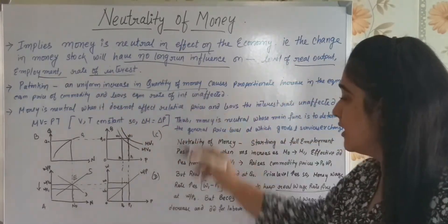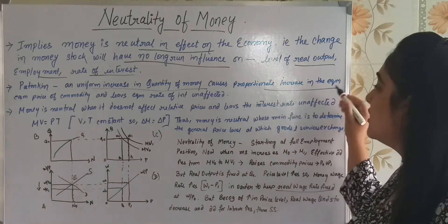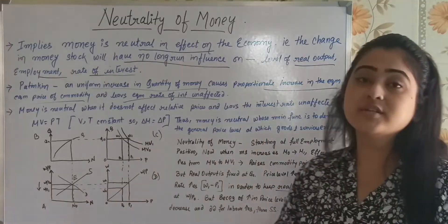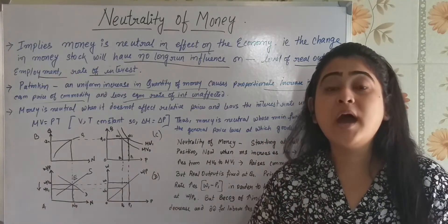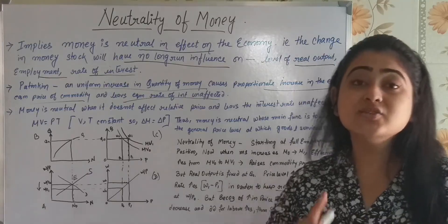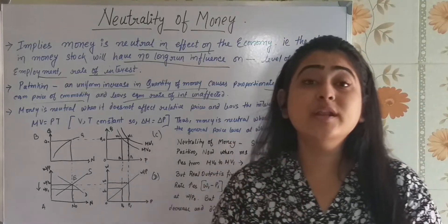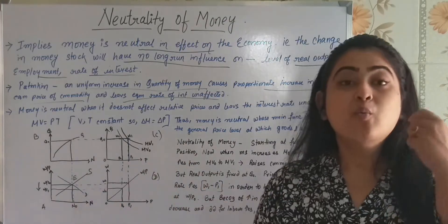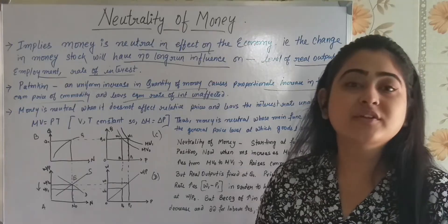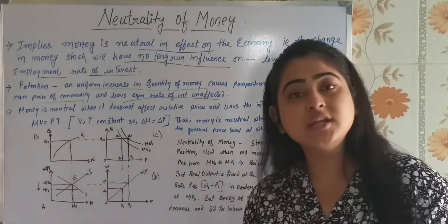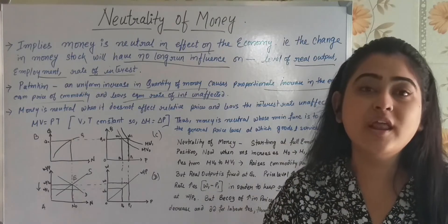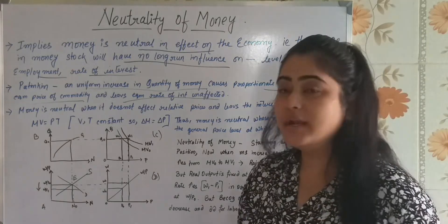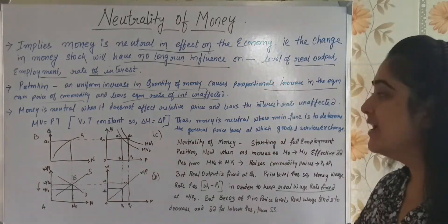The next point is by Patinkin. He said that a uniform increase in the quantity of money will cause a proportionate increase in the equilibrium price, and leaves the equilibrium rate of interest unaffected. The equilibrium price is not a real variable — so price will proportionately change with the change in the stock of money. But what will not change is the rate of interest, as that is a real variable. What will also not change is the full employment level, because that too is a real variable.